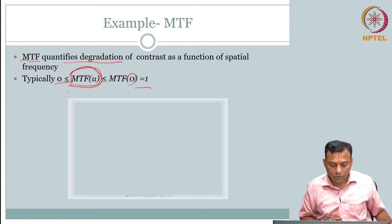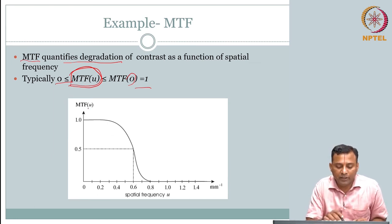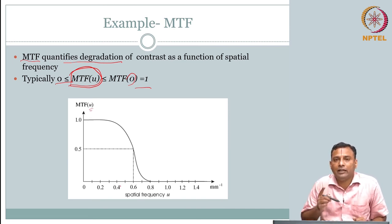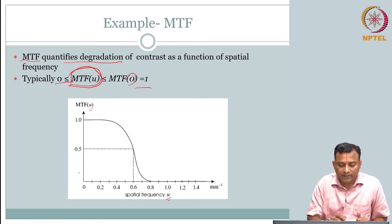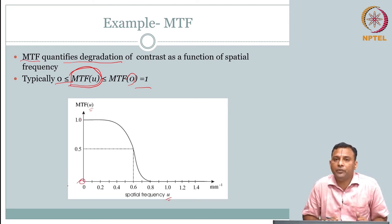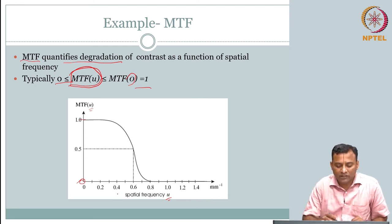MTF can be used to study and compare different imaging systems. For example, given three system configurations with MTF curves: all start at 1 at 0 frequency, so all perform equally well for homogeneous images. But as frequency increases, one has a broad, wide MTF curve, another is narrower, and the third falls off earliest. Clearly, the first transfers higher contrast at more frequencies than the second, which is better than the third. This gives a decreasing order of contrast capability. MTF can also be extended to 2D: H(u,v).